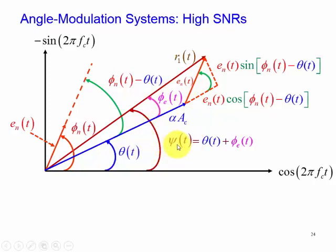And that's our psi of t of our resultant vector. So we can see that our angle of our resultant vector, psi of t, consists of two parts: signal angle plus the noise angle.